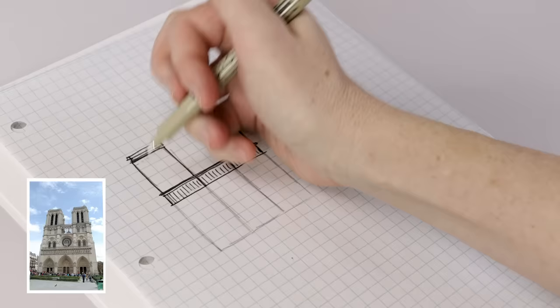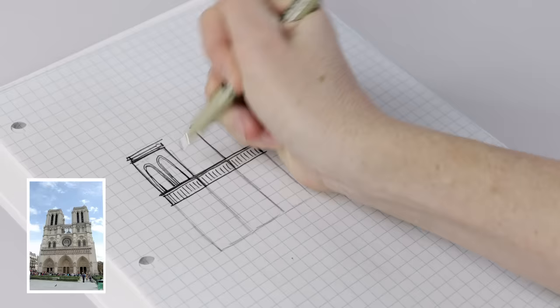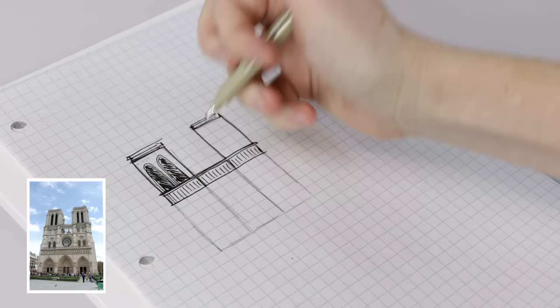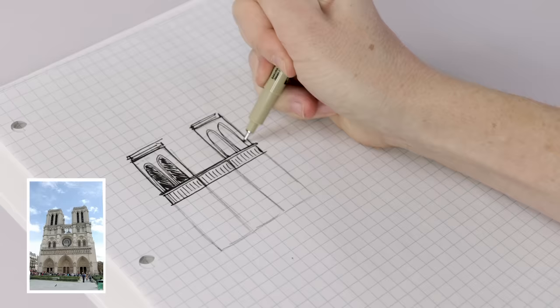I'm also going to do those big windows on the top sections here and just put a border around them because again all the architectural details that might be surrounding those big windows I can really just represent with an extra line. I'll add some line shading in the windows as well.